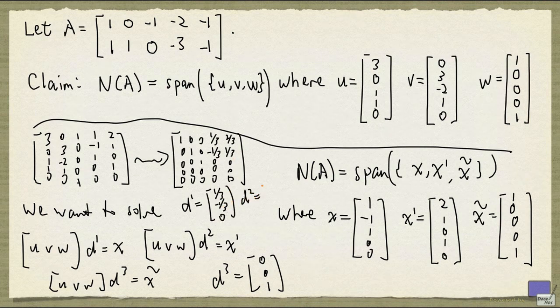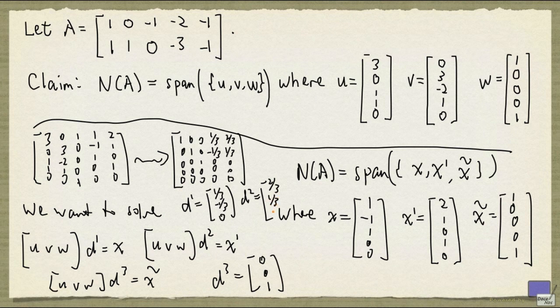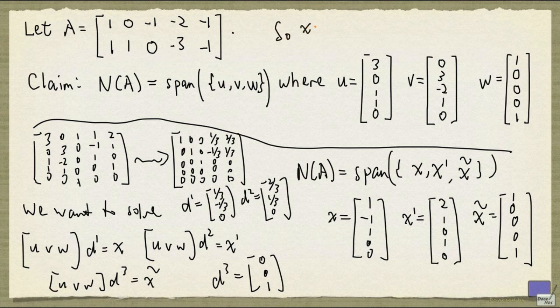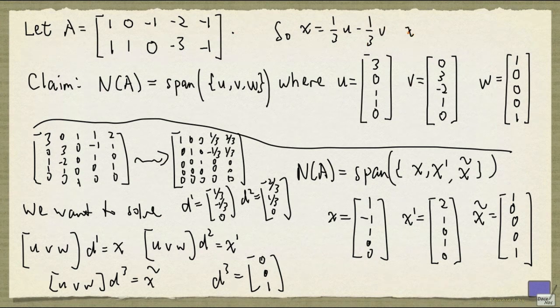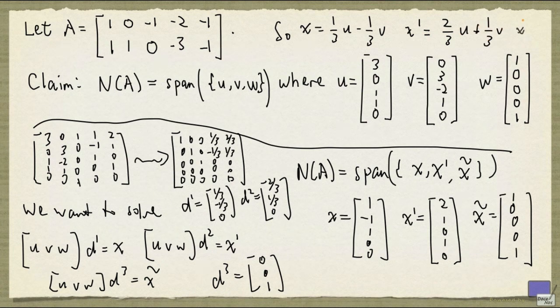And d2 to 2 over 3, 1 over 3, and 0. And you can check. So x is 1 third u minus 1 third v. x prime is 2 third u plus 1 third v. And x tilde is simply w.